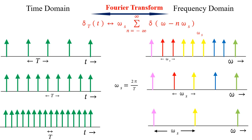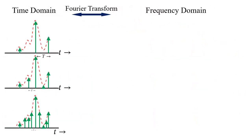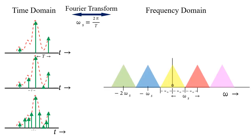In the time domain, the same signal is sampled at three different rates — the sampling rate increases as we go from top to bottom. For the middle case, impulses are located such that all spectras are placed adjacent to each other with zero spacing. All of these spectras are replicas of each other. The yellow spectra can be filtered out by passing the entire spectrum through an ideal low-pass filter with a cut-off frequency of omega_m. The original signal can be recovered in this case, and the sampling frequency omega_s here is twice that of omega_m.